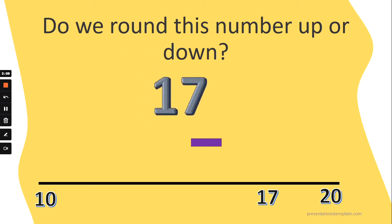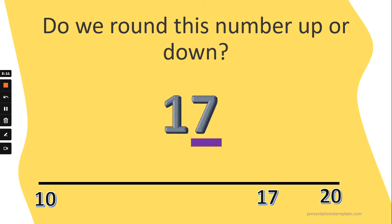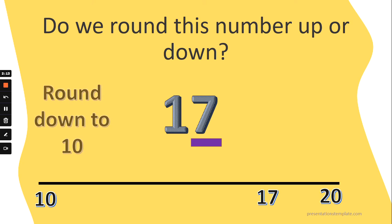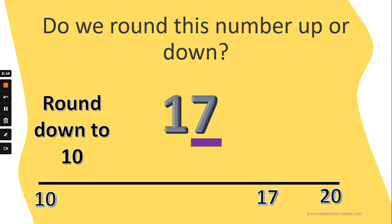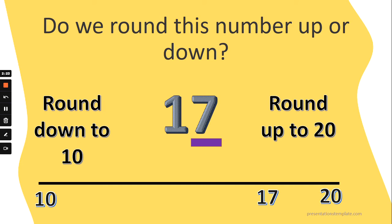What about the number 17? It's got seven ones. Does 17 round down to 10 or round up to 20? Look at its place on the number line. Is it closer to 10? Is it closer to 20? Five, six, seven, eight or nine — we round up to the next tens on the number line. Well done if you said we round up to 20. Fantastic.